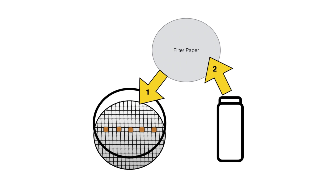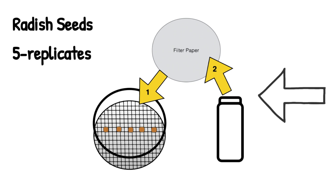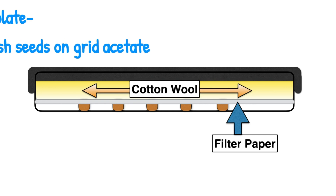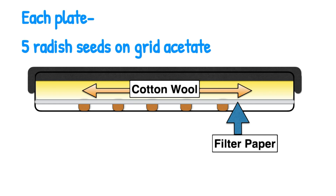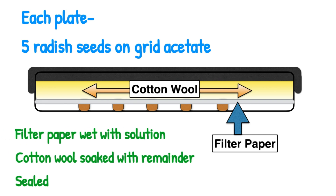For each bottle, get a petri dish and place clear grid acetate — that's going to help you measure any growth. Along the centre of the acetate place five radish seeds; you must use five because they're your replicates. Onto the top of this place some filter paper and wet it with some of the solution from the bottle. Then place some cotton wool on top of the filter paper and pour the remainder of the bottle solution in, then seal the dish. So sitting on your acetate are your five radish seeds, on top of that some filter paper, on top of that cotton wool soaked in the solution for that bottle. Each dish is sealed and labelled, then stacked on its side — it's important to stack it on its side because you want the roots to go down and the shoots to grow up.